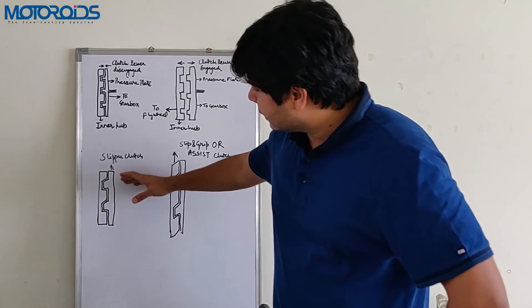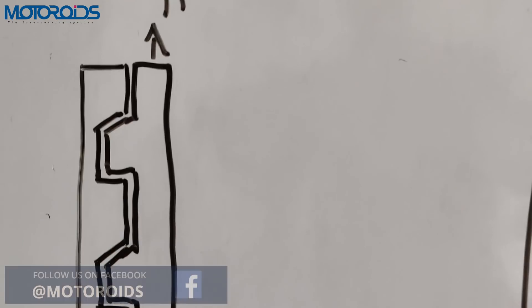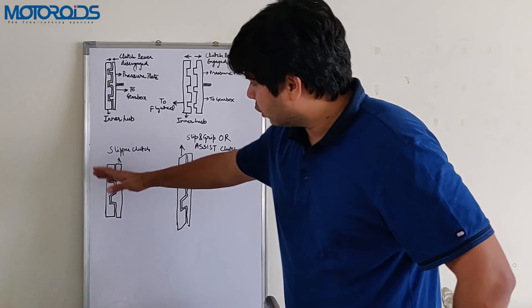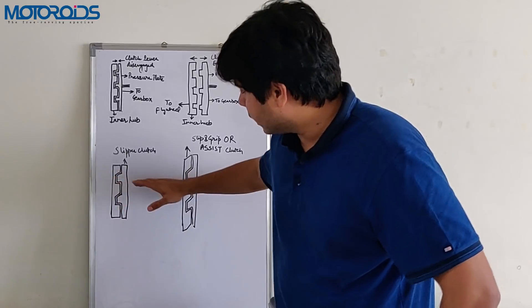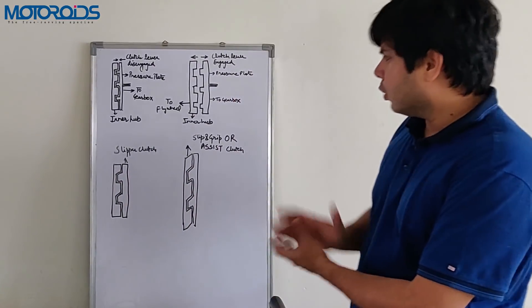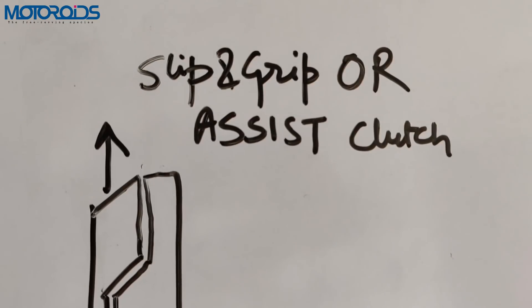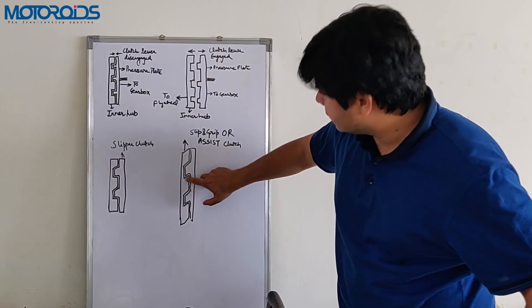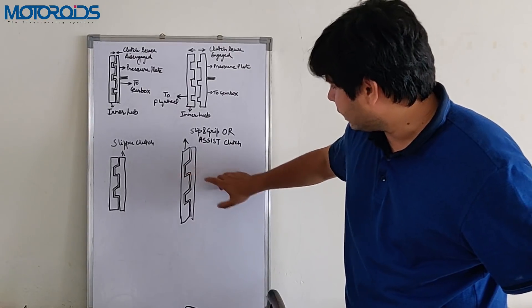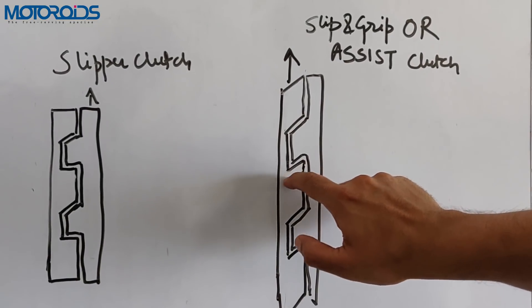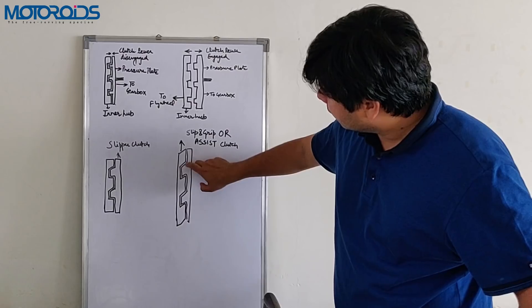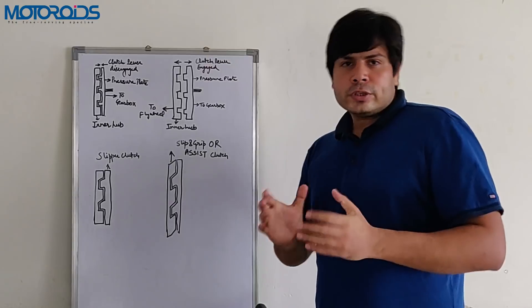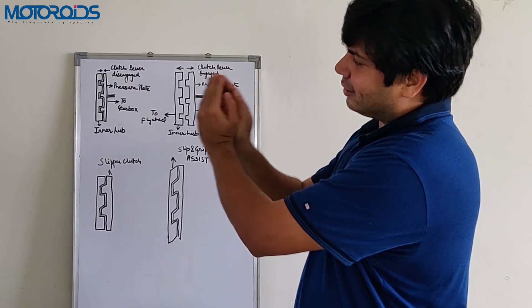For now what you need to understand is that with a slipper clutch the pressure plate will ride over the inner hub in case the wheel speed is higher than what the ideal engine speed should be at that point in time. An evolution of the slipper clutch is the assist clutch. As you can see, the difference here is that the ramps are not just on one side, there is a ramp on the inner side as well. The pressure plate as well as the inner hub both have ramps on both the sides.